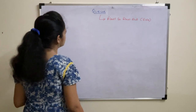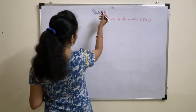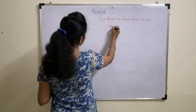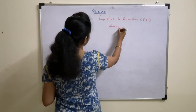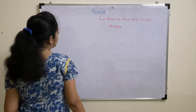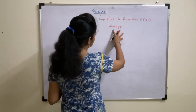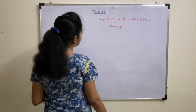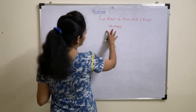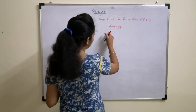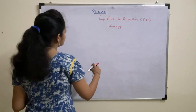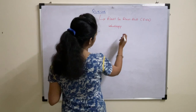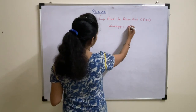Coming to the applications of Queue, we saw various applications. For example, we will be using this Queue in WhatsApp. When we send any message, if the person is not online, then those messages will be stored in a Queue. For every user a Queue will be maintained, and once your friend comes online then your messages will be delivered one after the other. So there we are applying Queue's concept.